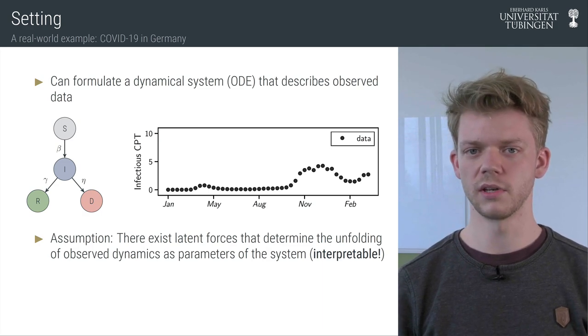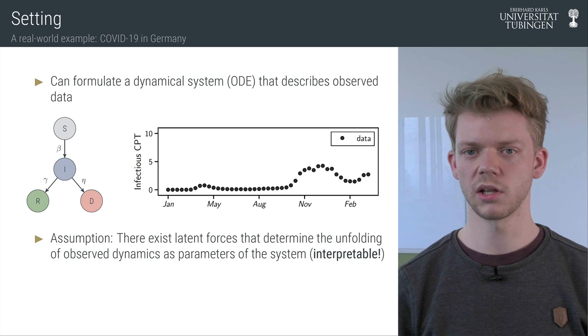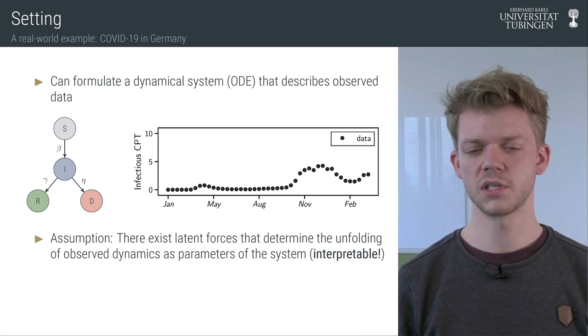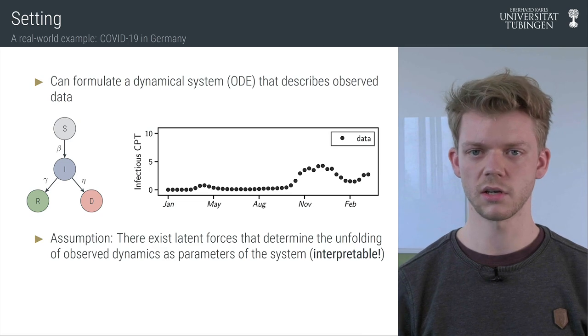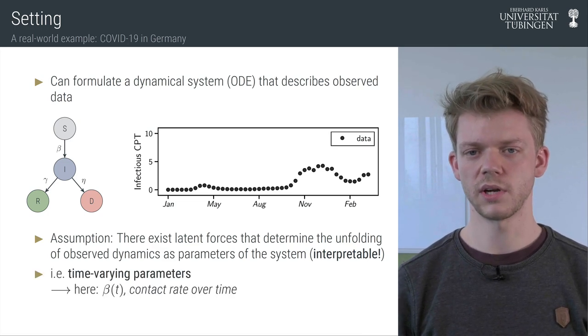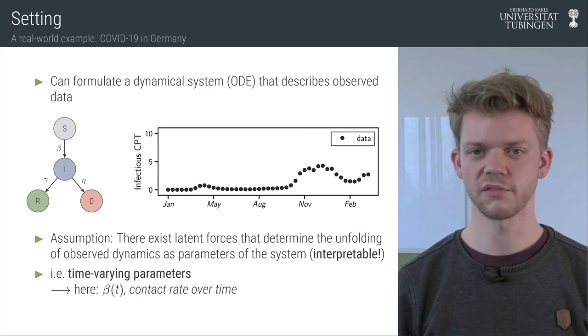As we already saw in the first video, infectious diseases can be modeled by epidemiological models such as the SRD system which you can see here on the left as a flow chart. In this scenario let us consider the contact rate beta which clearly cannot be constant over the course of a pandemic.